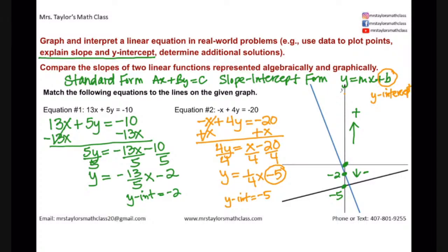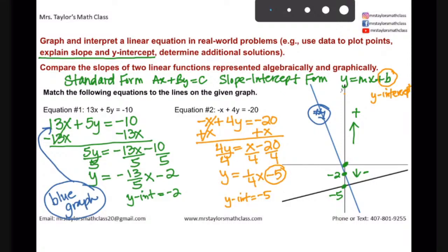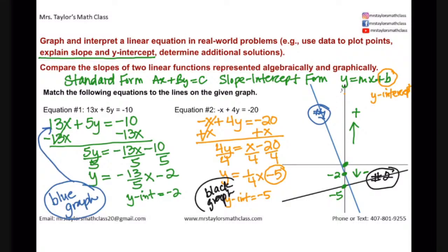So, if I had to highlight stuff, the blue graph goes with the y-intercept that has the negative 2. So, this would be the blue graph, this equation here. Equation 1. And then the black graph would be equation number 2, because it has a y-intercept of negative 5. So, if you need help with this kind of stuff, come see me. Meet me at the study session. MrsTaylorsMathClass.com You can go register. And, you do have to pay in advance to secure your seat.